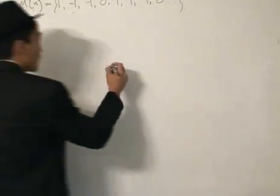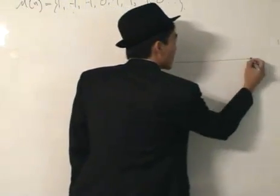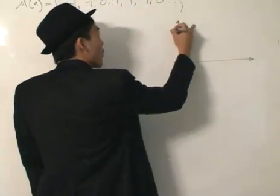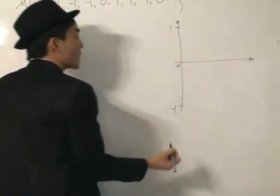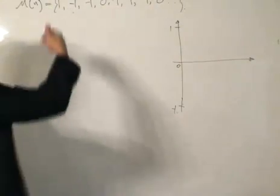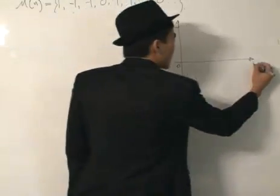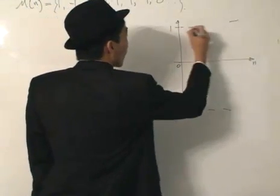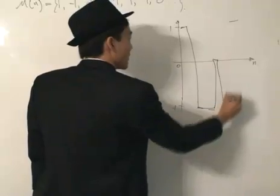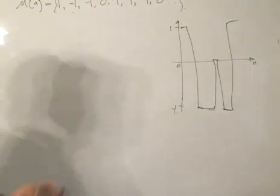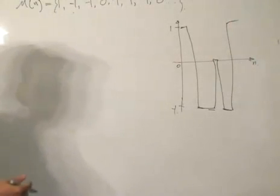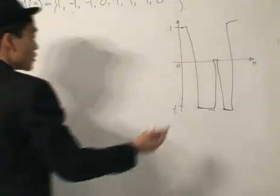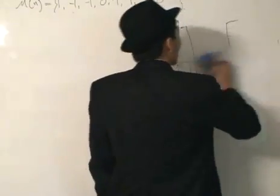Now we can graph this Möbius function, but it wouldn't be your typical x-squared graph or x graph. The axis has values one, zero, and minus one, because when we apply the function we only ever get one of those three values. So the graph would look something like: one, minus one, minus one, zero, minus one, one — just a bunch of blocks. Not much use. Check my website for a nicer rendition of it.